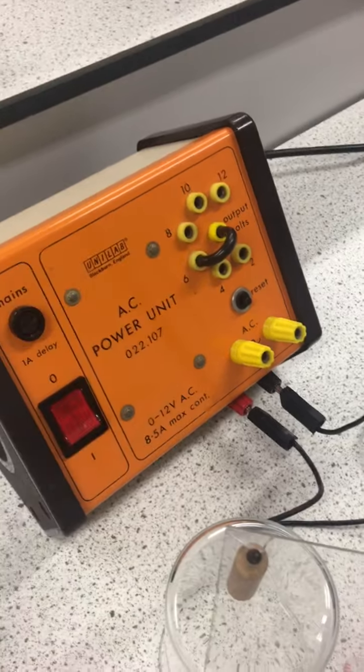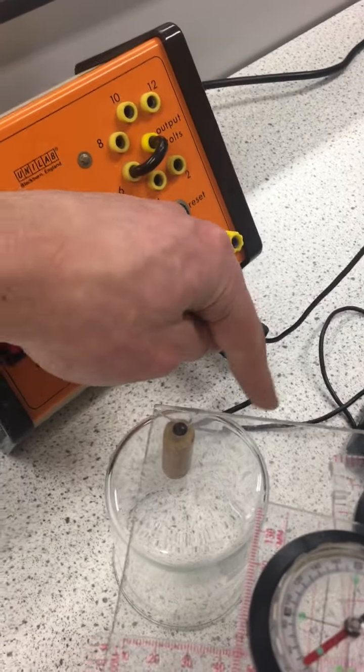So here I've got my power pack. I'm going to produce a six volt potential difference. I've got a direct current coming out of this positive terminal.